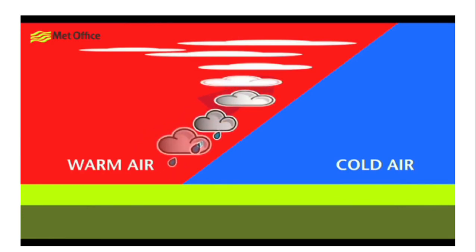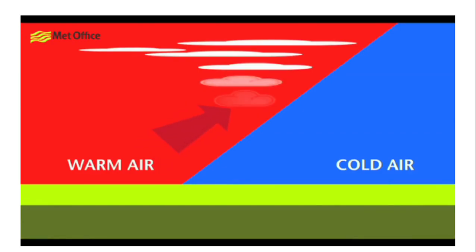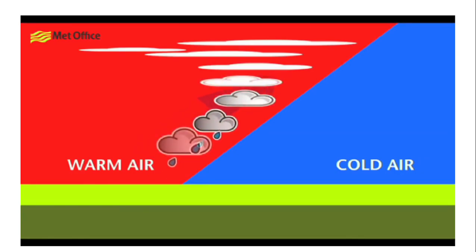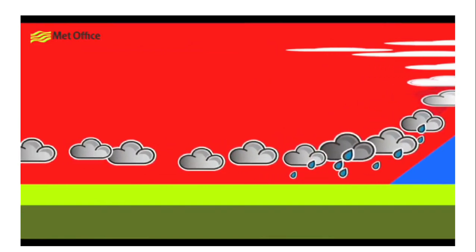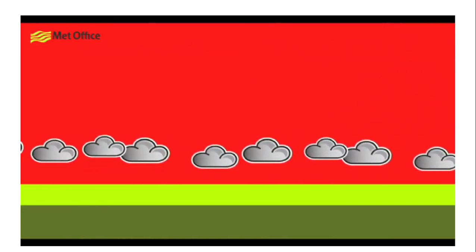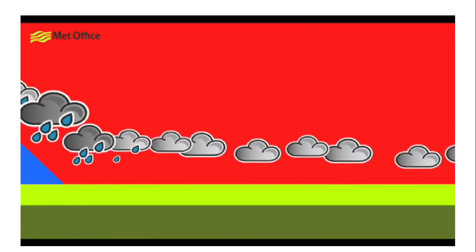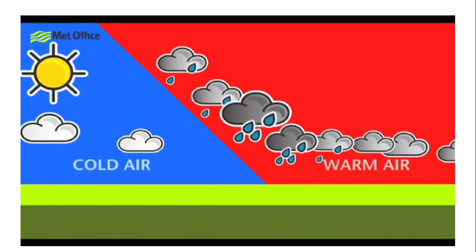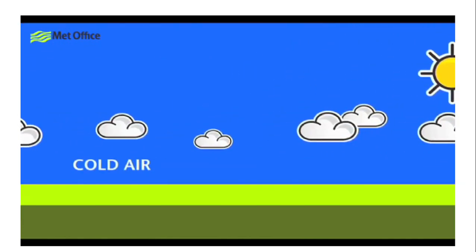As the warm front approaches, air pressure falls because the column of dense cold air above you is gradually being replaced with warmer and less dense air. Layers of cloud deepen and rain begins to fall. A warm front usually produces quite a long period of light and drizzly rain, with a shorter spell of heavier rain at the beginning of the front. The rain or drizzle will eventually die out once the front has moved through, but it will often stay pretty cloudy.